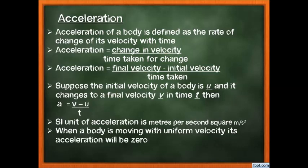Acceleration = change in velocity / time taken for the change. If final velocity is V and initial velocity is U, then acceleration a = (V − U) / t. For example, if a car was stationary (initial velocity = 0) and then moves at 25 km/h (final velocity), the change is 25 km/h over some time t.